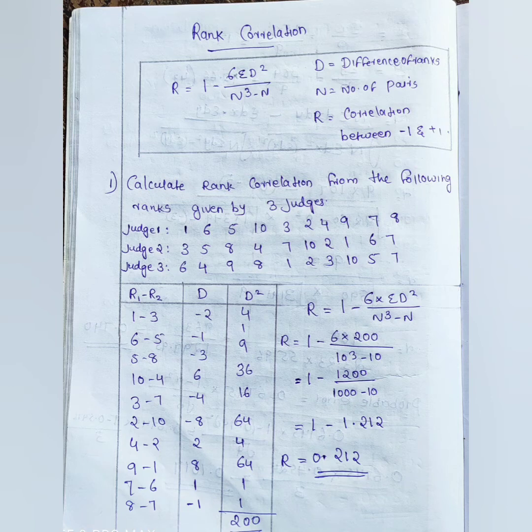The result is R equals 1 minus 1.212, which gives R equals minus 0.212. This is the rank correlation value.